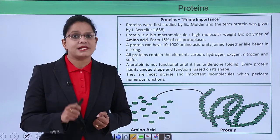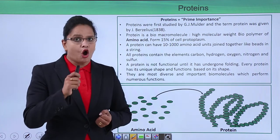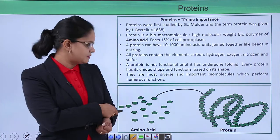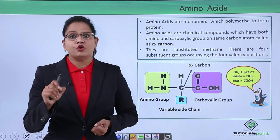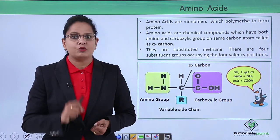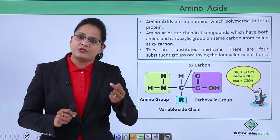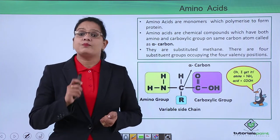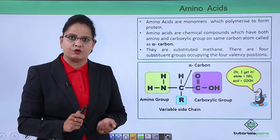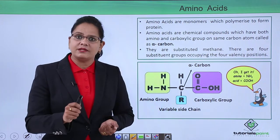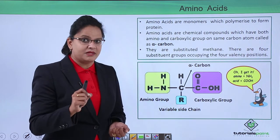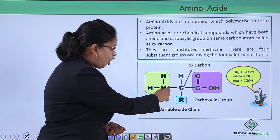The elements present inside a protein are carbon, hydrogen, oxygen, nitrogen, and sulfur. Amino acids are the monomers that form proteins. 'Amino' means an amine group is present; 'acid' means a group providing acidic nature is present. So amino acids are chemical compounds which have both an amino group as well as a carboxylic group on the same carbon, and that carbon is called the alpha carbon.